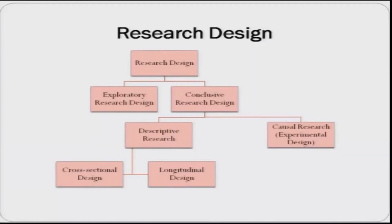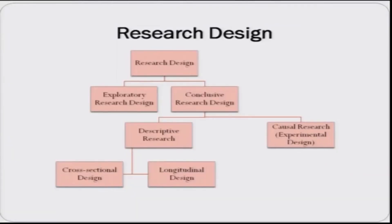Research design can broadly be of two types: exploratory research design and conclusive research design. Conclusive research design further has two parts: descriptive research and causal research. Descriptive research can be classified into cross-sectional design and longitudinal design. In exploratory research design, as the word suggests, it is about exploration. It can answer questions like why, how, and when, but not how many times or similar quantitative questions. It is about exploring and sharpening your problem further. Many qualitative research techniques are employed here to help with the exploration.